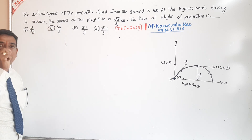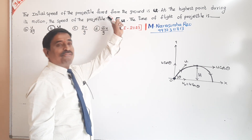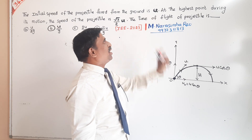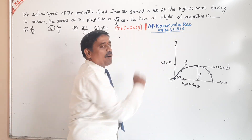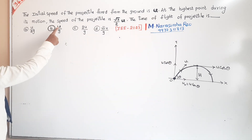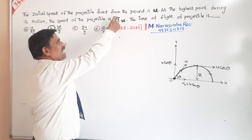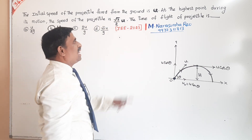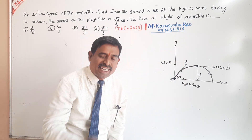The initial speed of the projectile fired from the ground is U. At the highest point during its motion, the speed of the projectile is root 3 by 2 U. Find the time of flight of the projectile.